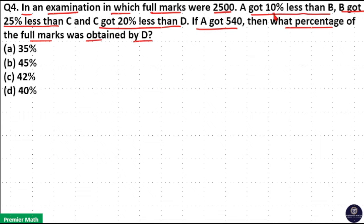A got 10% less than B. That means A is to B ratio will be - 10% less than means 10 by 100 which is equal to 1 by 10. So if B got 10 marks, then A got 1 less than 10, that is 9. So 9 is to 10 is the ratio of A and B.